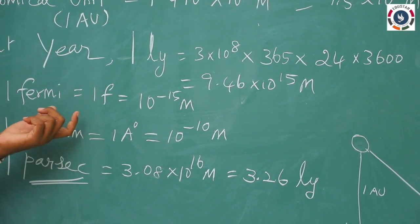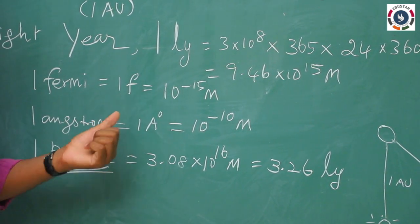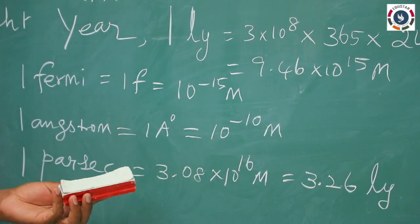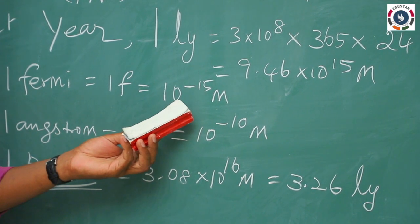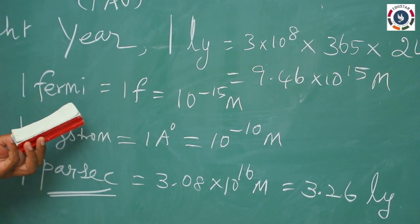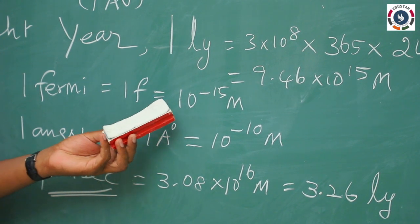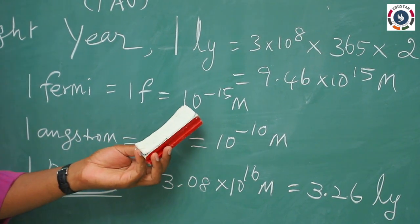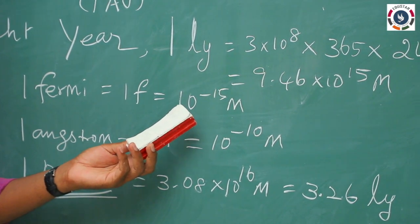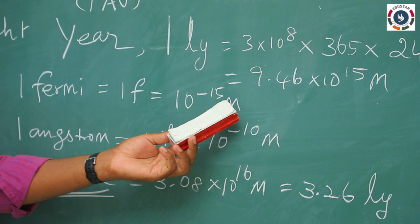And 1 Fermi — this unit is used to measure the least distances at atomic scale. Its value is 1 Fermi = 1 f = 10⁻¹⁵ meter. It is used for measuring the distances or size of atoms and nuclei. This scale is applicable to nuclear values: for protons, electrons, and neutrons, whose sizes are in the range of Fermi, 10⁻¹⁵ meter.